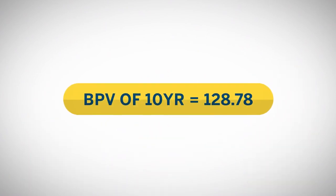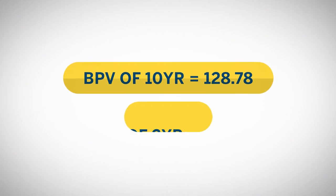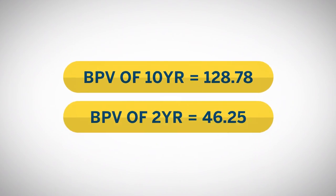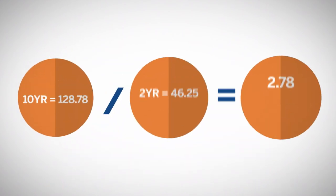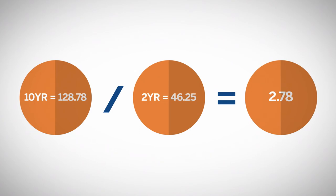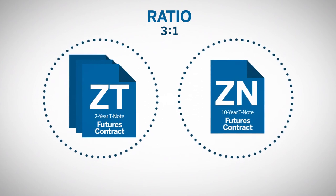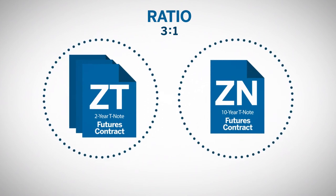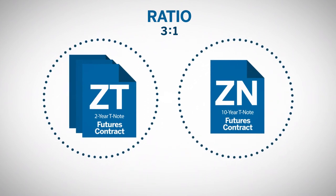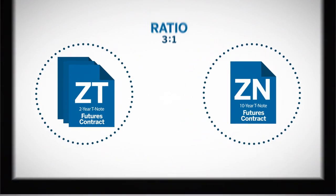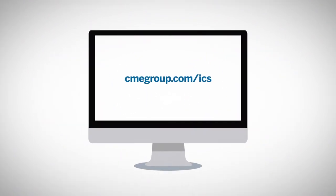For example, if the BPV of the ten-year note is 128.78 and the BPV of the two-year is 46.25, then the spread ratio equals BPV ten-year divided by BPV two-year, equals 128.78 divided by 46.25, equaling 2.78, or roughly 3 to 2. This means the trader would trade three two-year notes for every ten-year note they trade. To make it easier for traders, these ratios are published on the CME Group website.